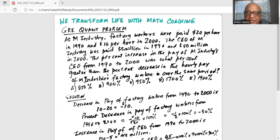Percent decrease in the pay of factory workers from 1990 to 2000 is the actual decrease minus $10 divided by the starting salary in 1990, which was $20 times 100%, which is minus half times 100% or minus 50%.